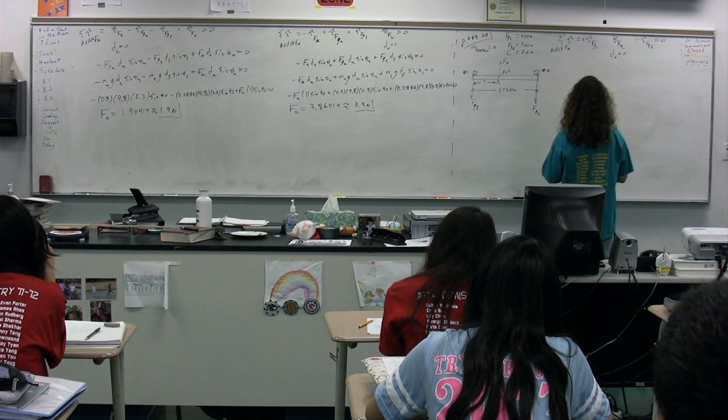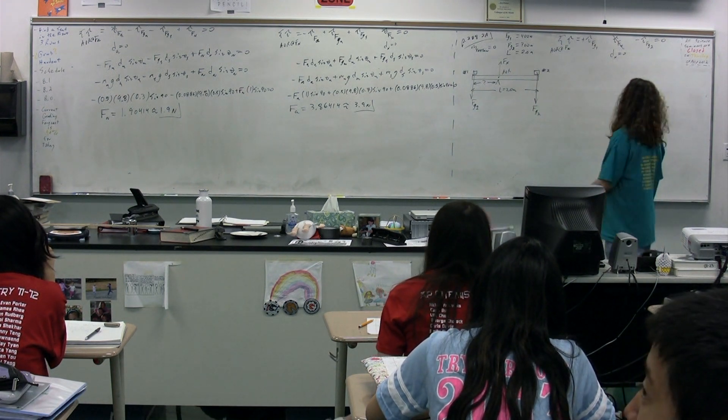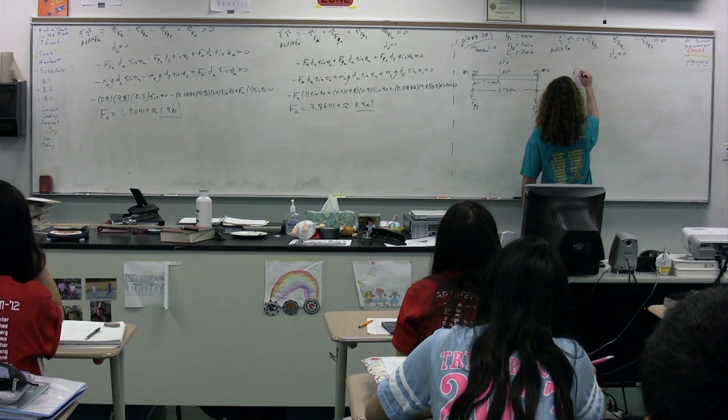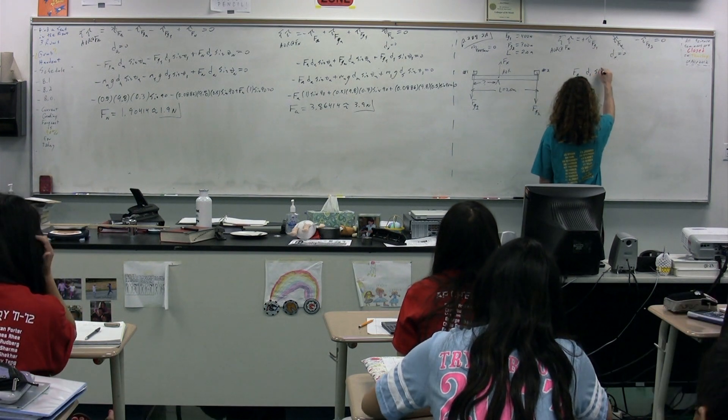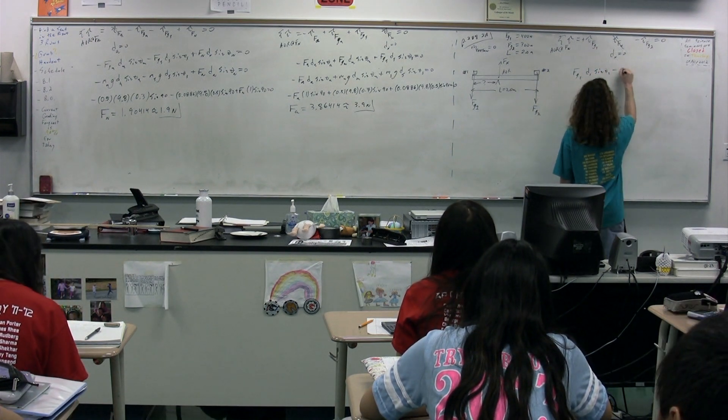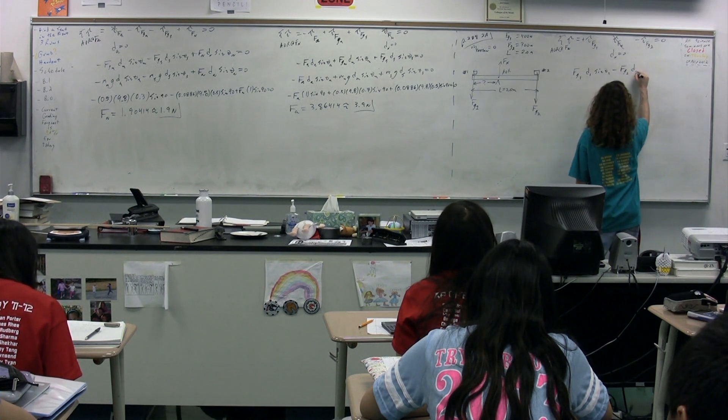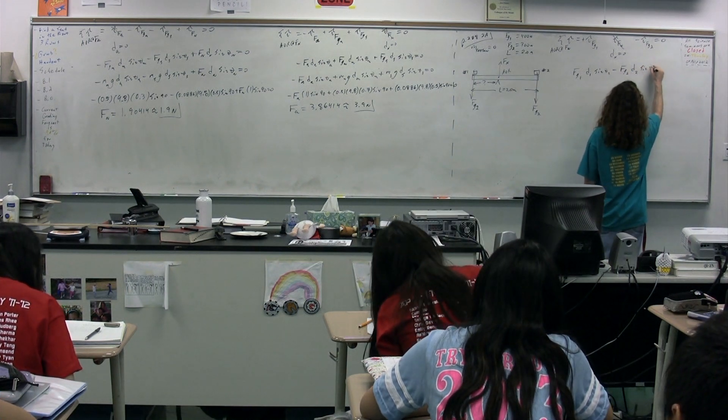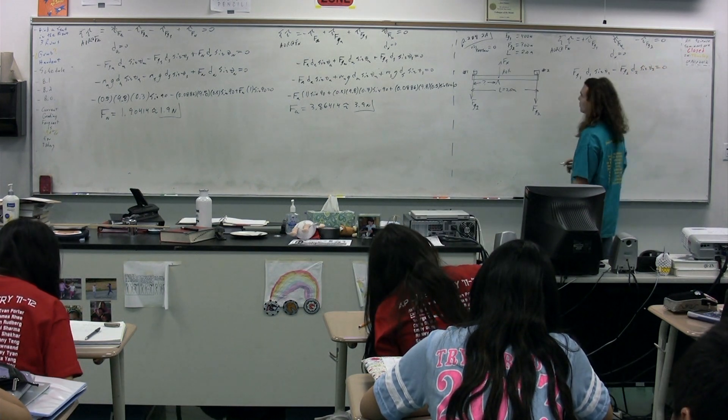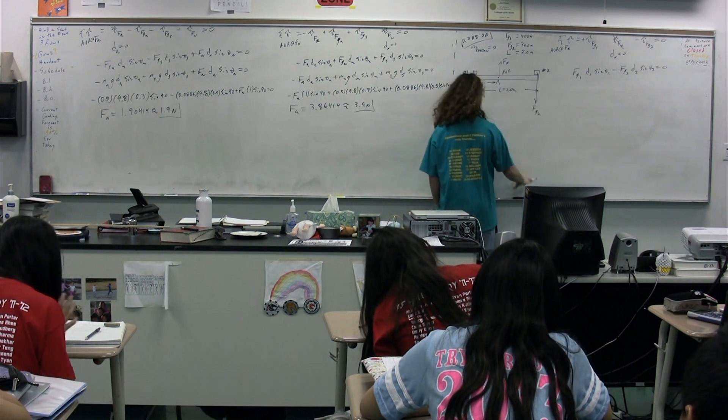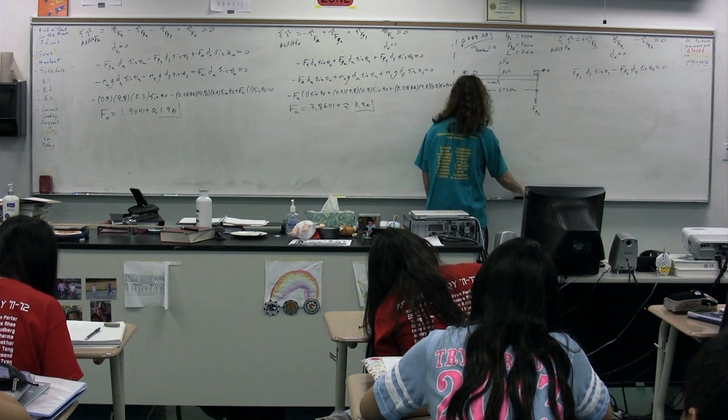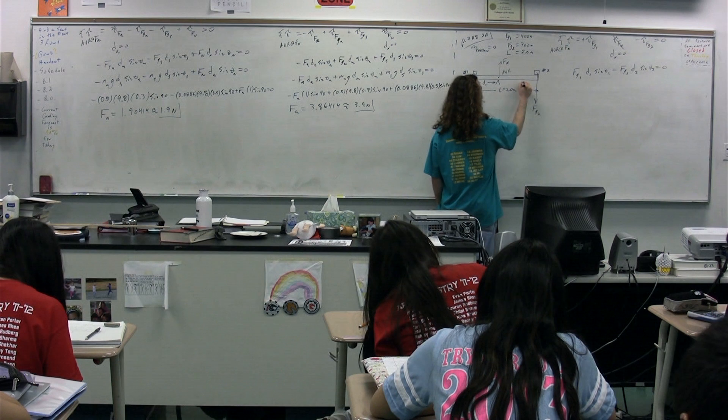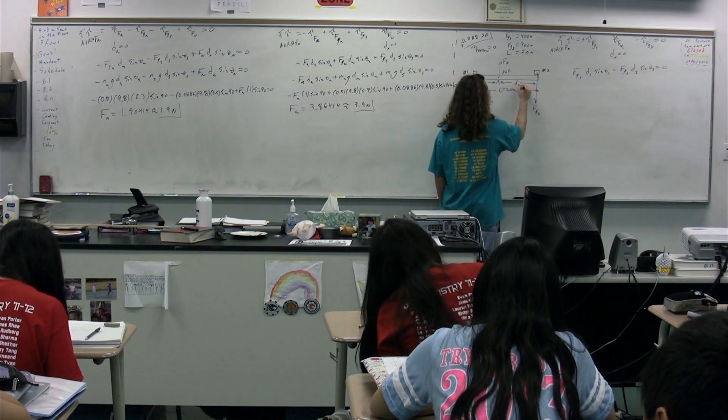So again, just substituting in the force times the lever arm times the sine of theta, we have force of gravity one times the lever arm for one times the sine of theta for one minus the force of gravity of child two times the lever arm for child two times the sine of theta for child two, which is equal to zero. So just so you know, let's identify here. This is going to be lever arm one. This is going to be lever arm two.